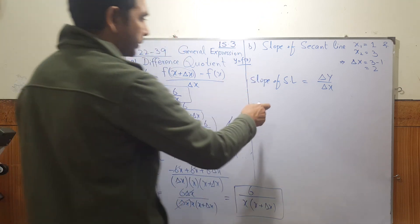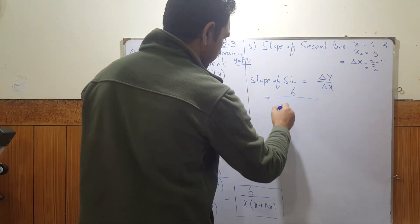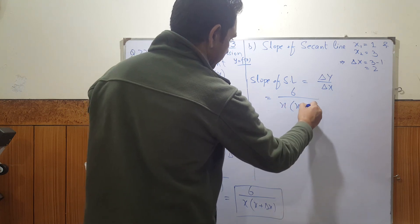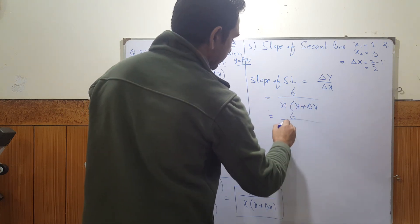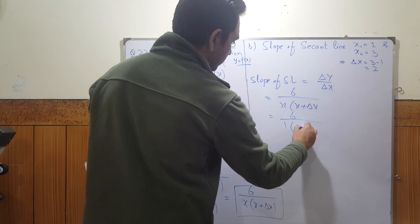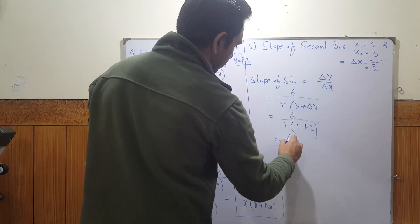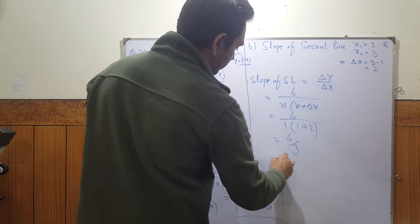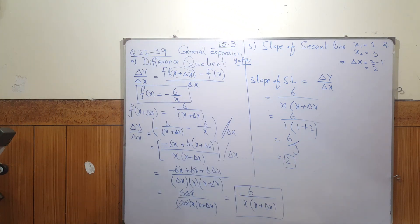For the slope, we substitute x equals 1 and delta x equals 2 into 6 over x(x + delta x): that is 6 over 1 times (1 + 2), which equals 6 over 3, giving us 2. Thank you very much.